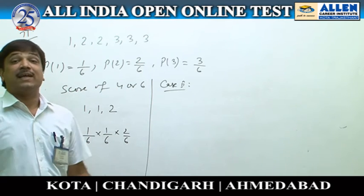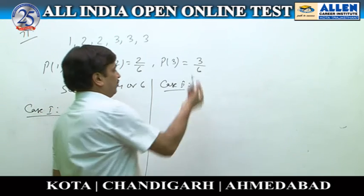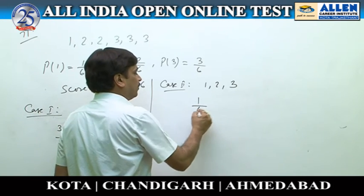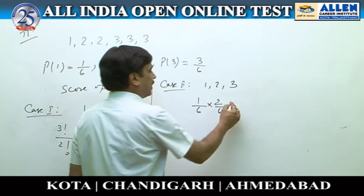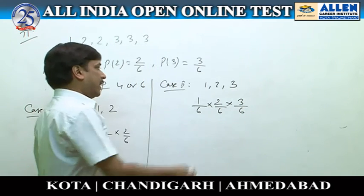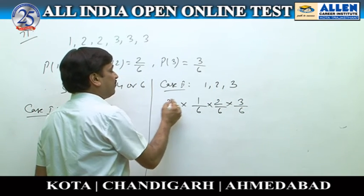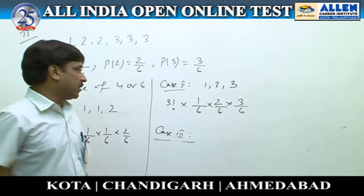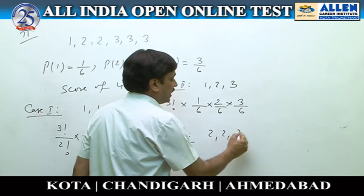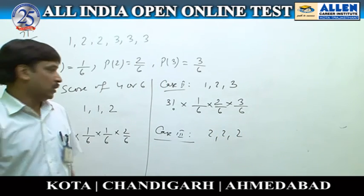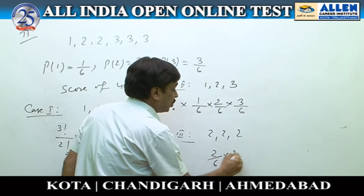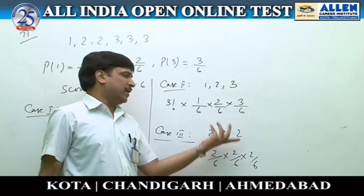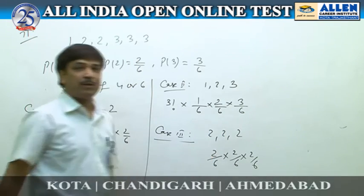For total score of 6, there are two cases. Case 2: (1, 2, 3) — probability is (1/6)(2/6)(3/6) × 3! since all three are different. Case 3: (2, 2, 2) — probability is (2/6)(2/6)(2/6) × 1, since all three are the same and can be arranged in only one way.